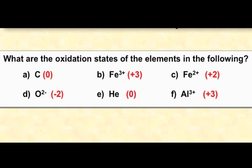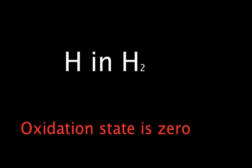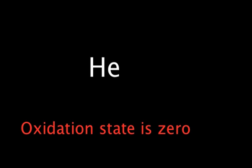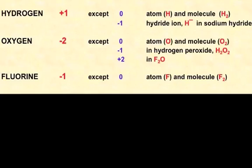The first rule is that atoms when they're in the form of an element will always have oxidation state of zero. So hydrogen in H2 will be zero, helium on its own will be zero, sulfur in S8 will be zero and so on. And there are certain rules that we can take into account.